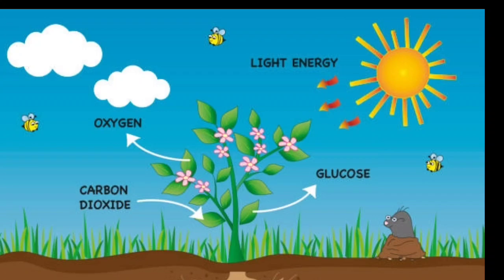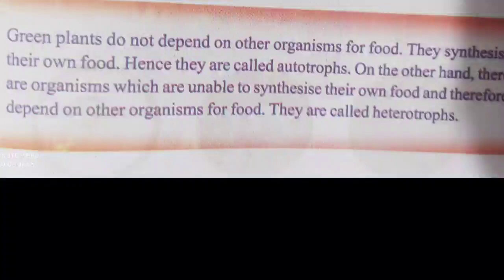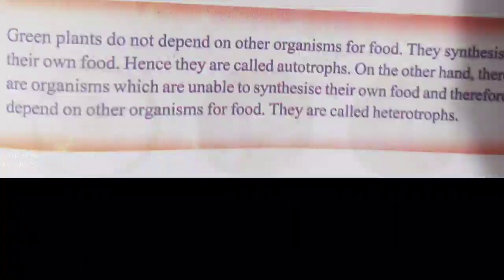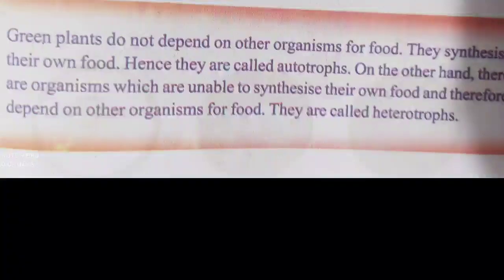Photosynthesis is a process of making food in the leaves of plants with the help of carbon dioxide, water and minerals, and chlorophyll in the presence of sunlight. Green plants do not depend on other organisms for food; they synthesize their own food. Hence they are called autotrophs. On the other hand, there are organisms which are unable to synthesize their own food and therefore depend on other organisms for food. They are called heterotrophs.